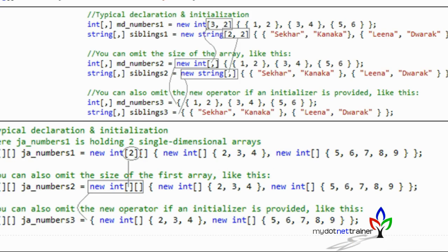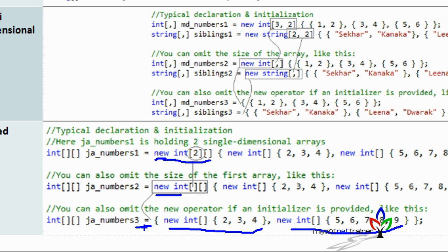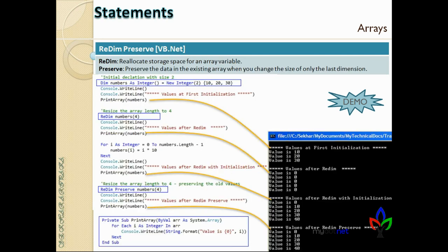This covers initializing arrays. You can try this as homework since we have a lot of topics to cover today. Now, here comes ReDim Preserve — a very cool feature of Visual Basic .NET. This feature is a legacy carry-forward from VB6 and is still supported in .NET for backward compatibility. It is still a very useful feature.